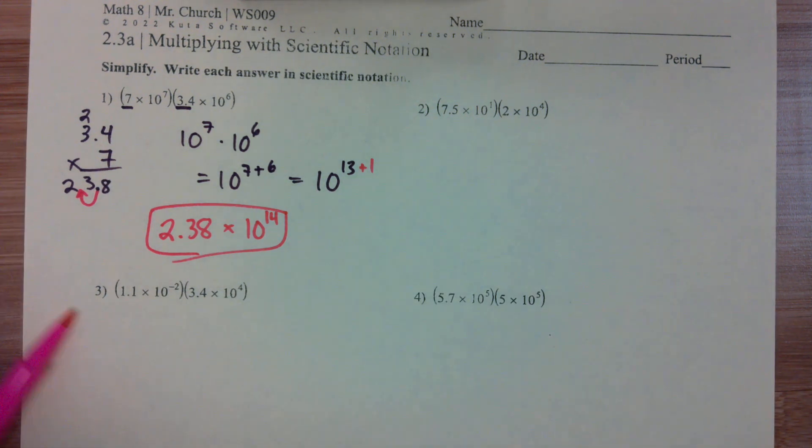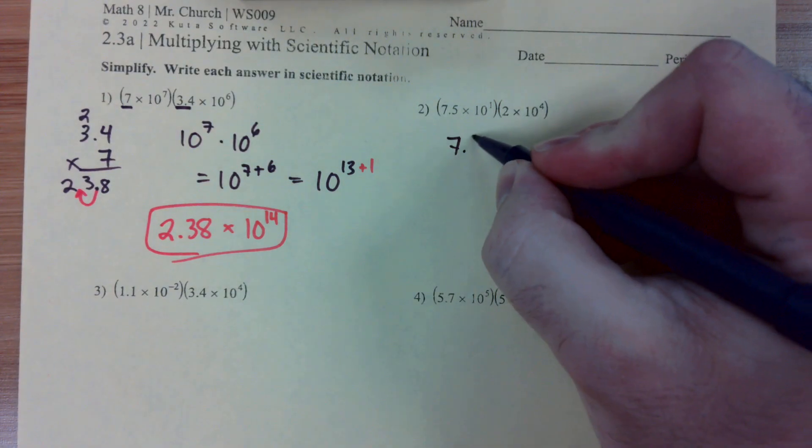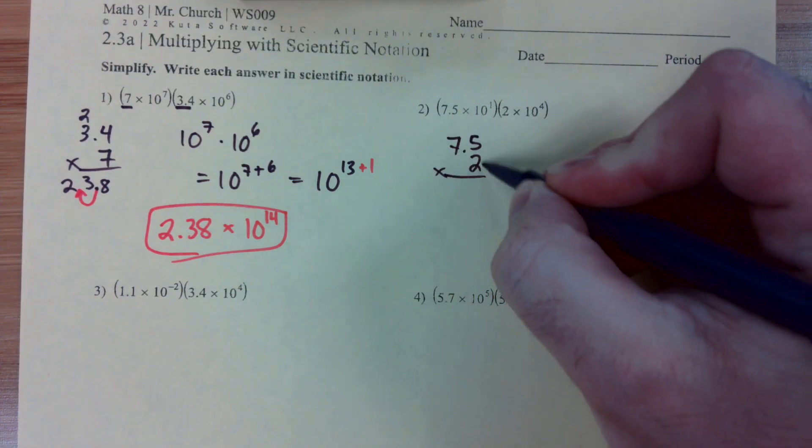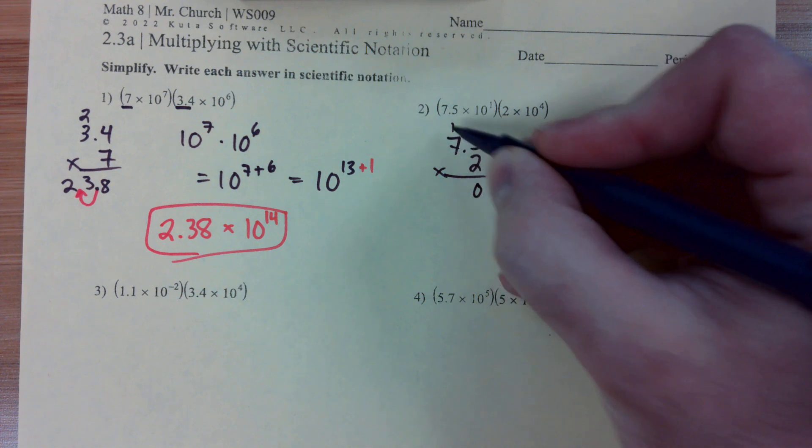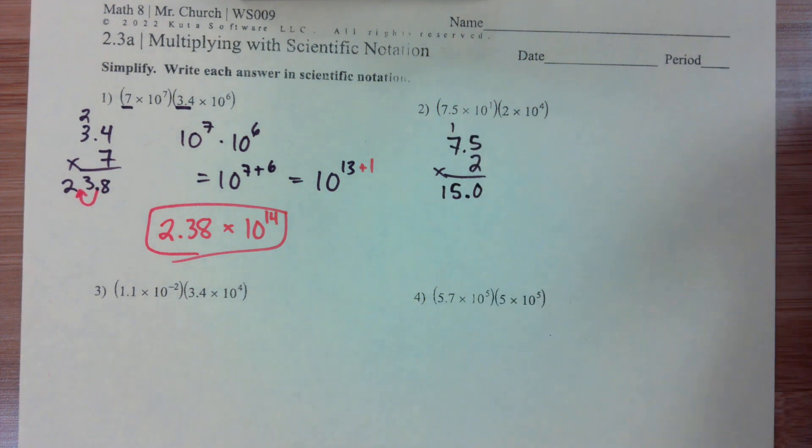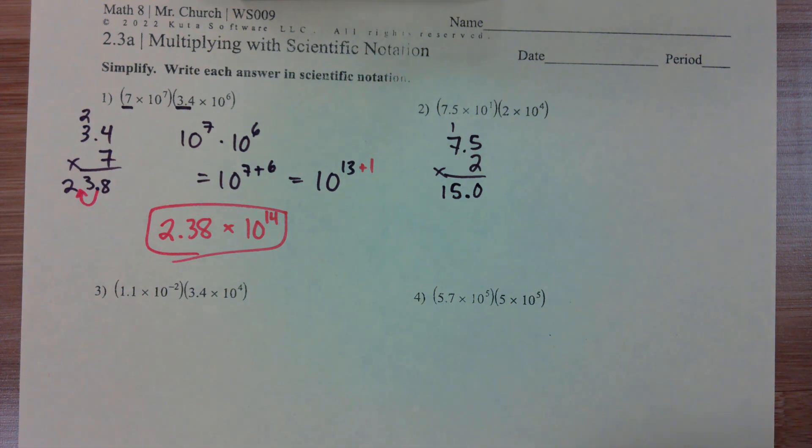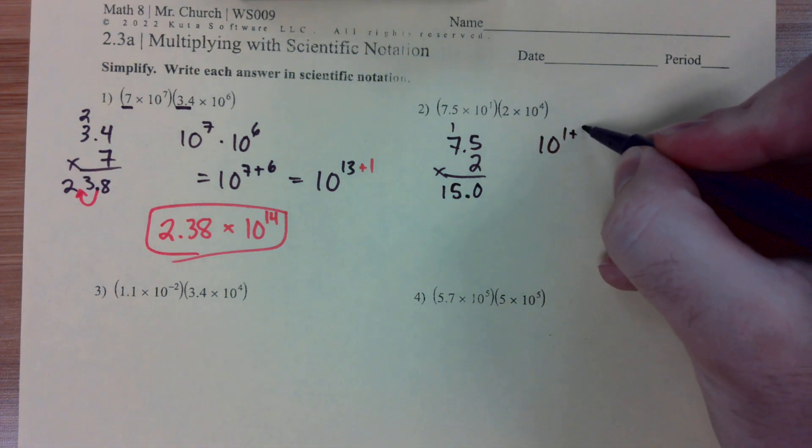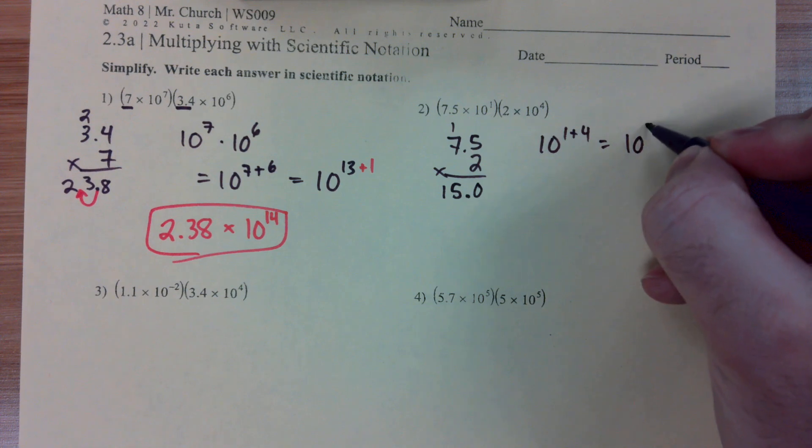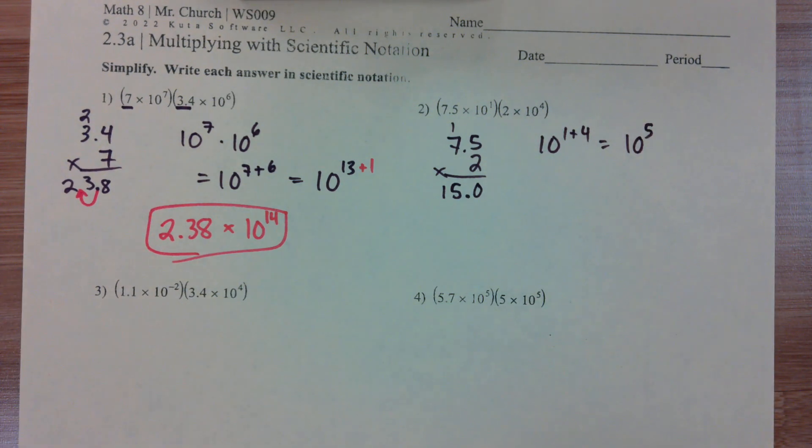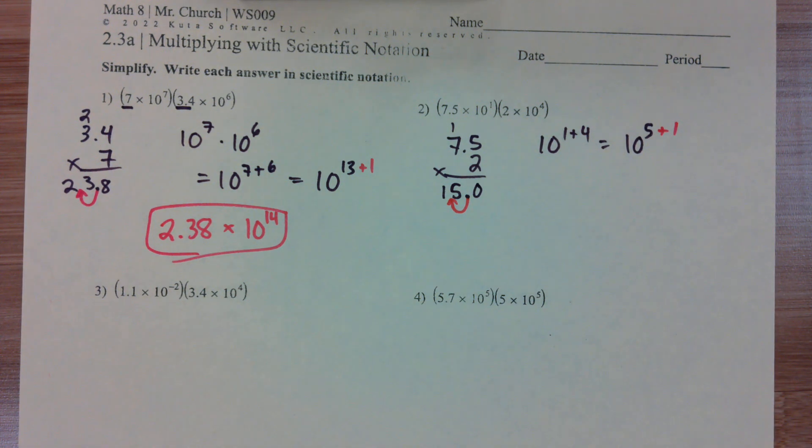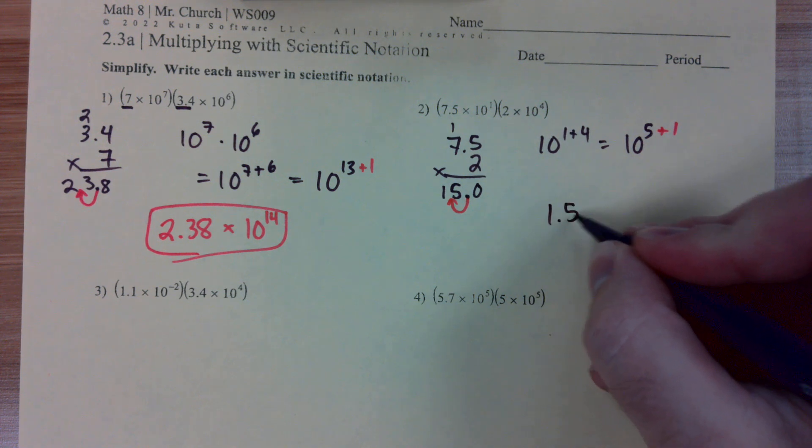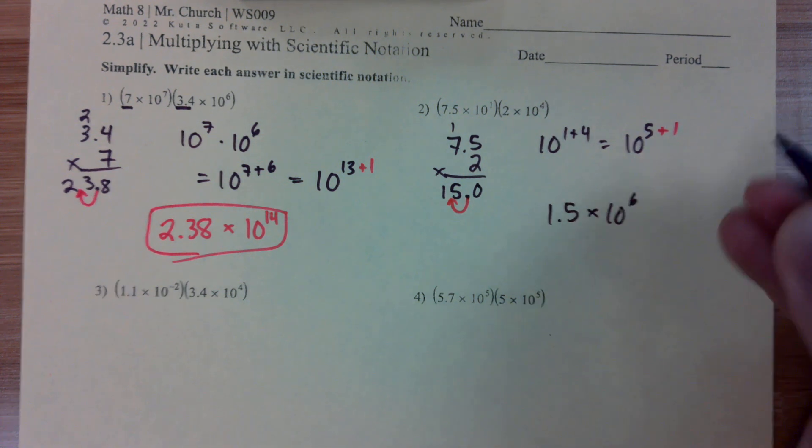Number 2. Again, we start by multiplying. 7.5 times 2. 2 times 5 is 10, 2 times 7 is 14 plus 1 is 15 with the one decimal point. 10 to the 1 plus 4 gives us 10 to the 5th. But again, we've got to move this decimal one space over, thus adding one to our power of 10. 1.5 times 10 to the 6th.